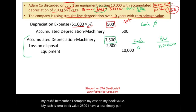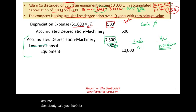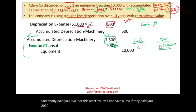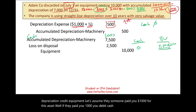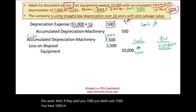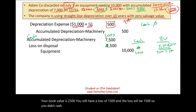As long as we don't receive more than $2,500, we have a loss. If we receive exactly $2,500, we break even — debit cash $2,500, debit accumulated depreciation, credit equipment, no gain or loss. If someone paid $1,000 for this asset, debit cash $1,000; the book value is $2,500, so we have a loss of $1,500. The entry: debit cash $1,000, debit accumulated depreciation, debit loss on disposal $1,500, credit equipment.